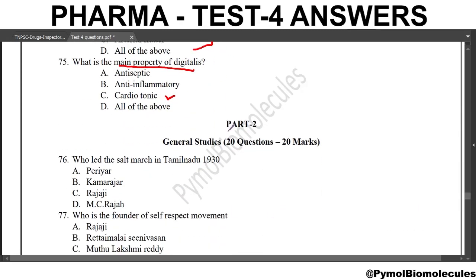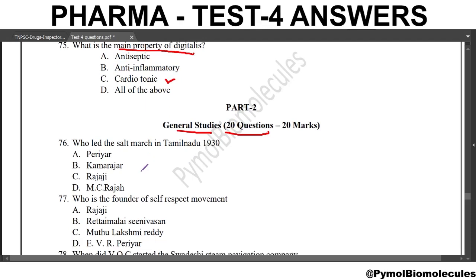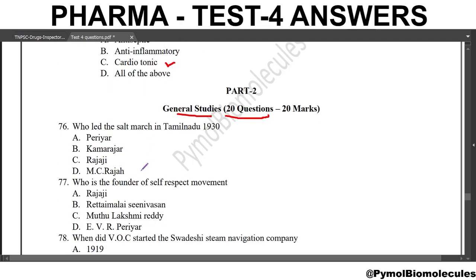Now we move to Part 2: General Studies. 20 questions are given here. First question: who led the salt march in Tamil Nadu in 1930? The answer is Rajaji. Rajaji led the salt march in Tamil Nadu in 1930.